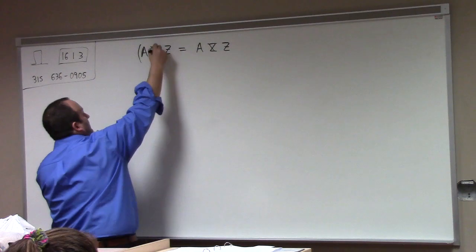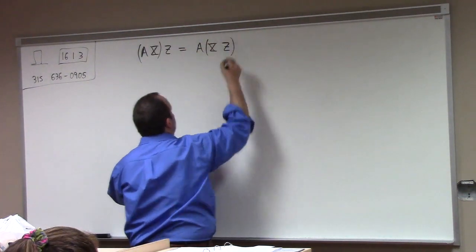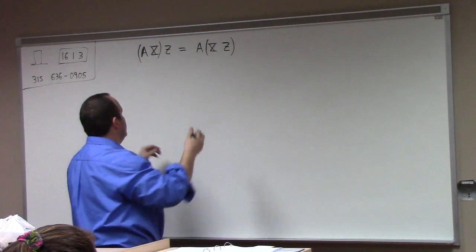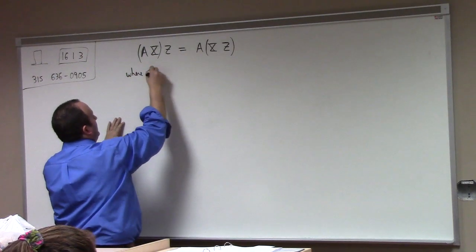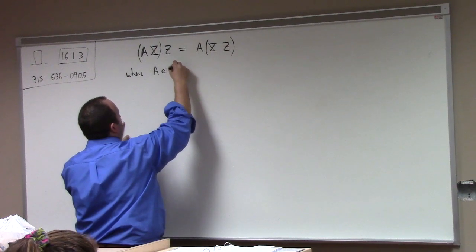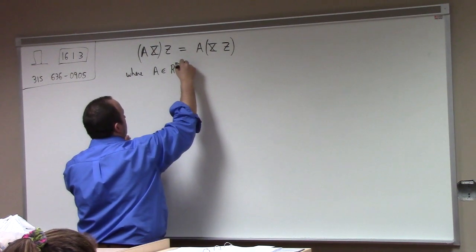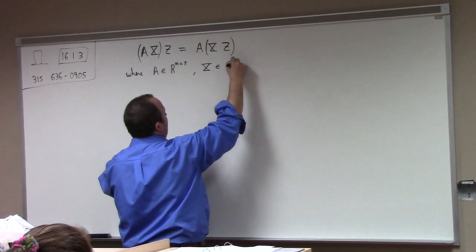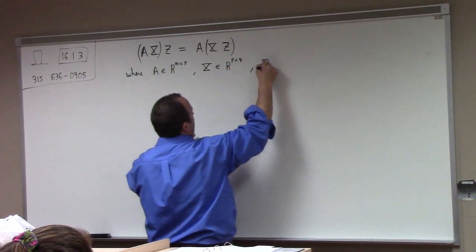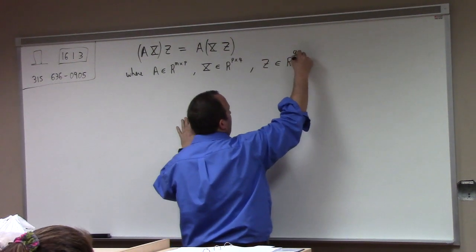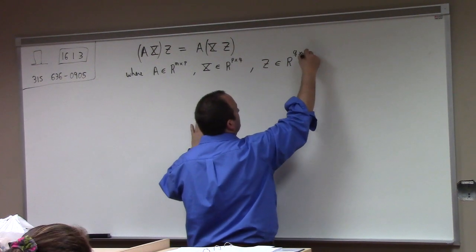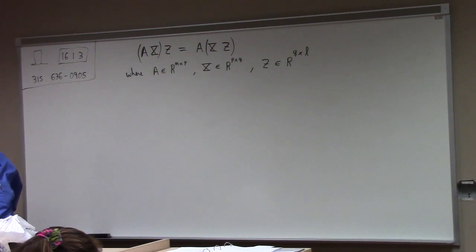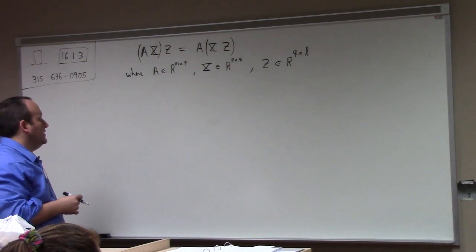One of the properties of matrix multiplication is that it's associative, which is really pretty neat. I'm assuming that A, X, Z are all matrices of appropriate size. Let's say that A is in R M by P, X is in R P by Q, and Z is in R Q by L. I need those dimensions for the matrices in order to multiply them.